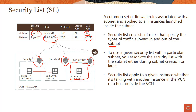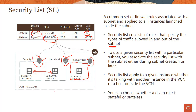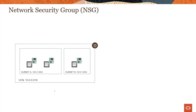Security lists apply to a given instance whether it's talking with another instance in the VCN or a host outside the VCN. This is really important — if two instances want to talk to each other, you still need to open the security list on both sides, otherwise they cannot communicate with each other. This enforces more security, otherwise you would have a completely different security model. You can also decide whether a given rule is stateful or stateless, which we'll cover in more detail shortly.